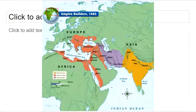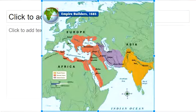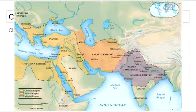Here is another map. You see the Ottoman Empire in red, the Safavid Empire in purple, the Mughal Empire in yellow, and here on the left side is where the Songhai Empire would be.